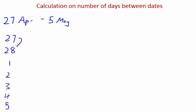From the 28th to the 1st of May that's another day, so one day, two days, three days, four days, five days, and six days. So we know there are six days between the 27th of April to the 5th of May.